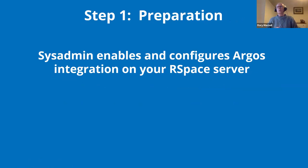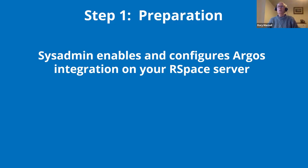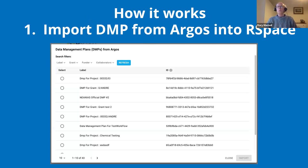Here are some screenshots from RSpace to preview what Rob will show in more detail. This is an institutional solution: an RSpace sysadmin first enables and configures the Argos integration on the institutional server. Step one in the workflow is to import a DMP from Argos into RSpace — you can see here a simple list. You can also take advantage of Argos's powerful search parameters, filtering by label, grant, funder, and collaborators.